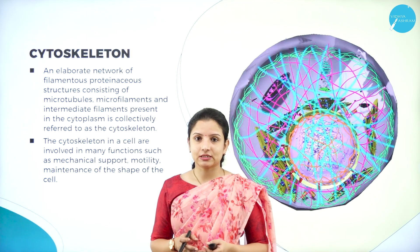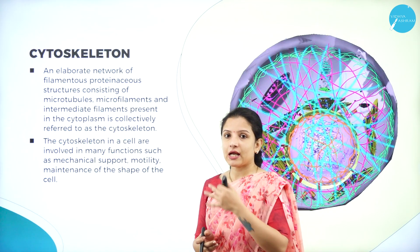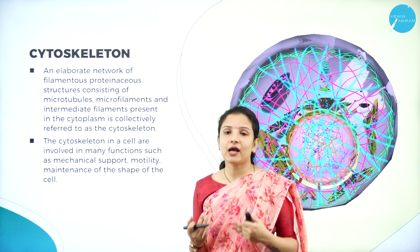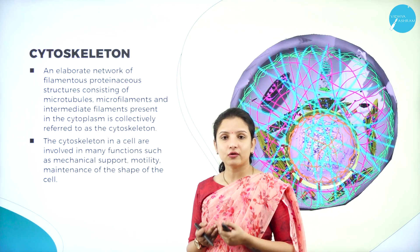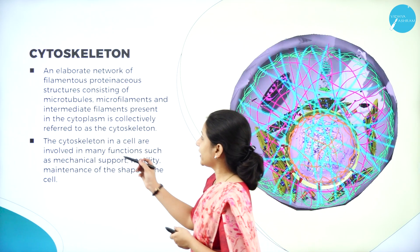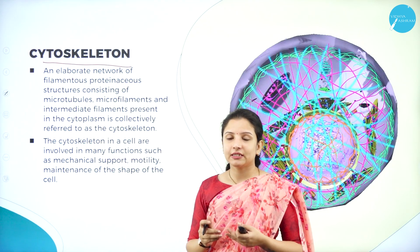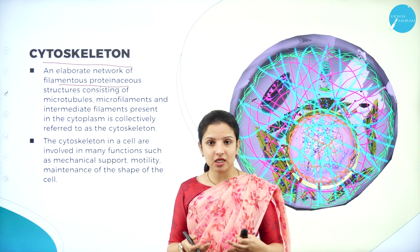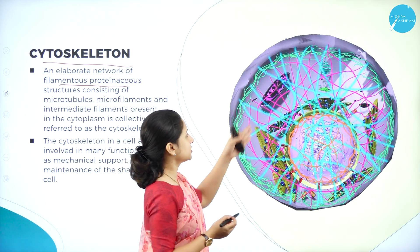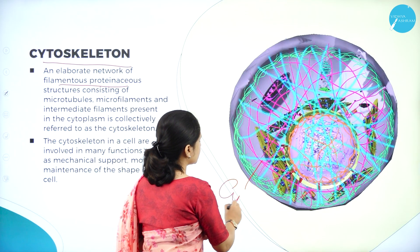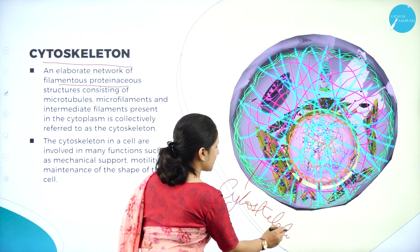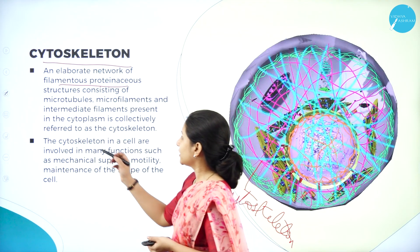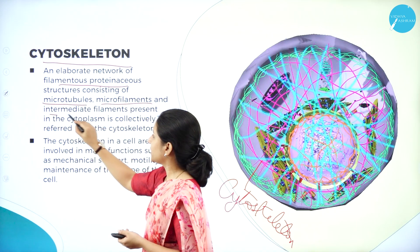Starting with cytoskeleton — as the name suggests, 'cyto' means cell and 'skeleton' is the structural component that gives shape to a body, just like our skeletal structure. Similarly, cells also possess a skeletal structure. The cytoskeleton is a continuous network of filamentous proteinaceous structures forming a network made up of microtubules, microfilaments, and intermediate filaments.